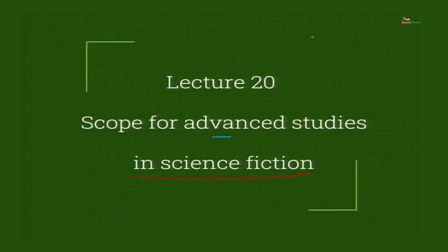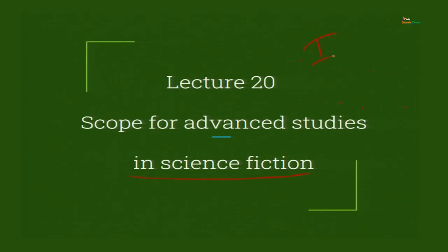We will now talk about the various authors — the big three we have discussed: Heinlein, Asimov and Clarke. Then we have Ray Bradbury. If you have a chance, go back and look at their works and the awards and recognitions they received. You will have a very clear idea of the science fiction scenario and when it became popular in the US and over the world. After that, we discussed Indian authors — the Indian science fiction scenario — Satyajit Ray, Jayant Vishnu Narlikar, Vandana Singh and authors like Gokulananda, who have contributed massively to creating the entire picture of science fiction in India.